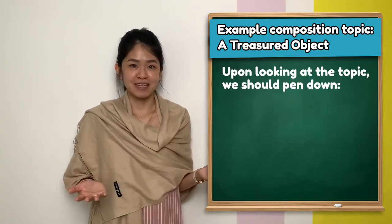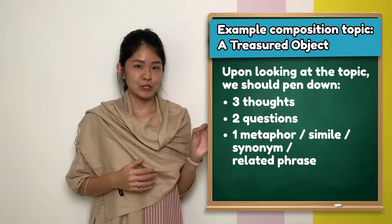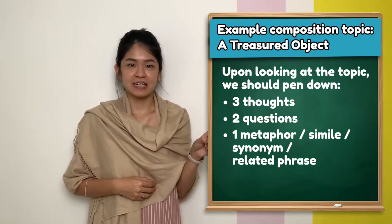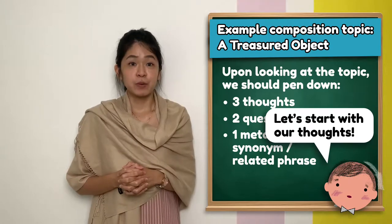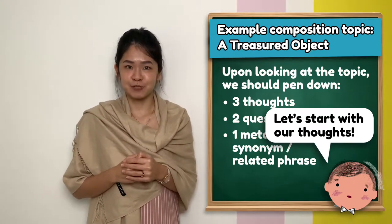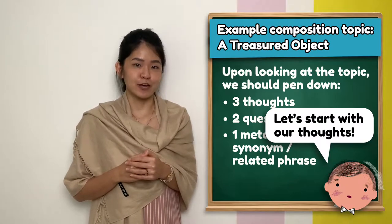Upon looking at the topic, students should pen down 3 thoughts, 2 questions, 1 metaphor, simile, synonym or related phrase. We will start off with our thoughts. It is important to pen this process down so that you can keep track of your ideas.